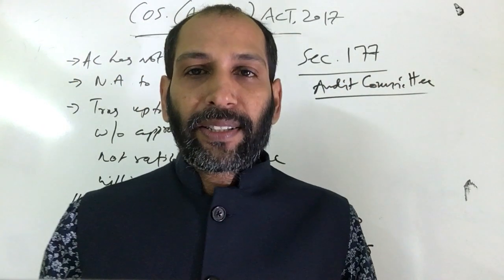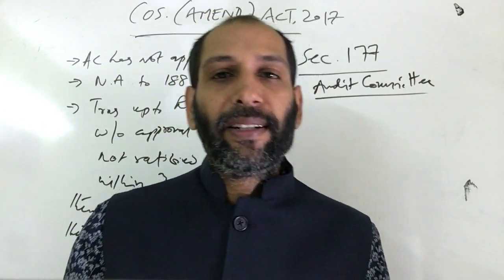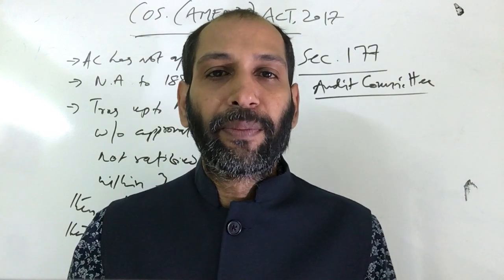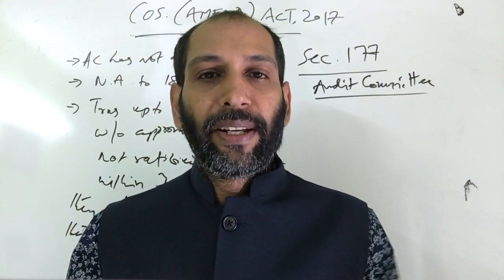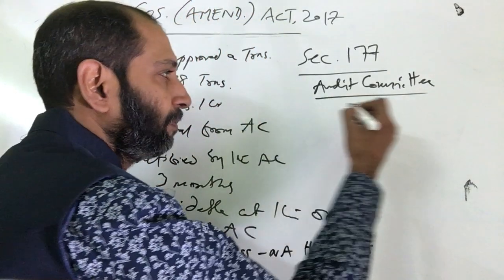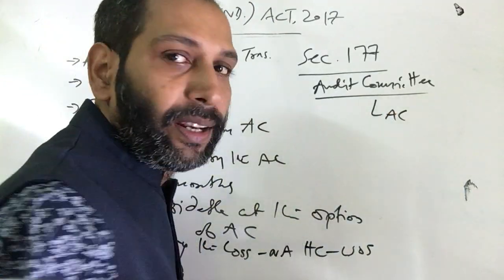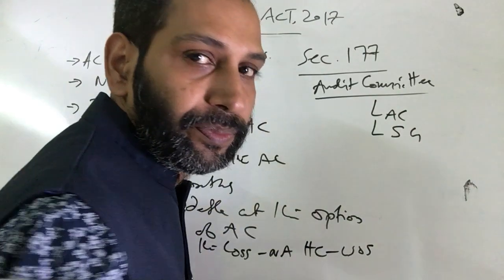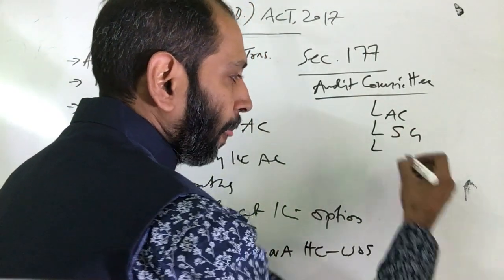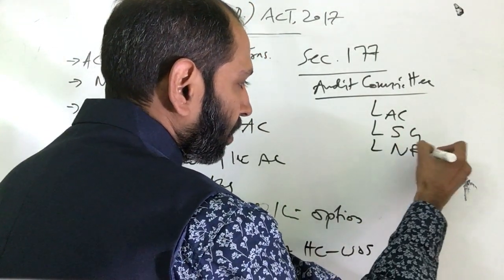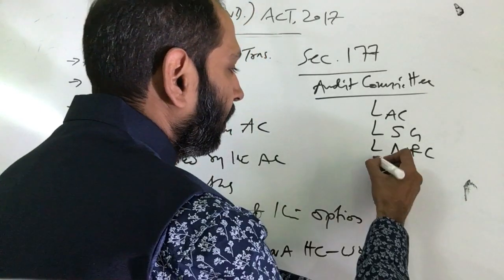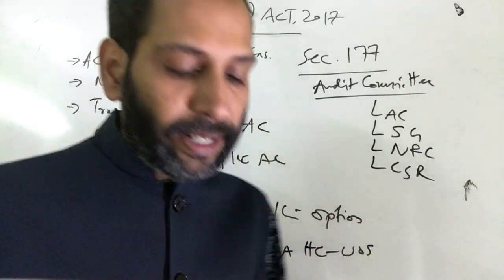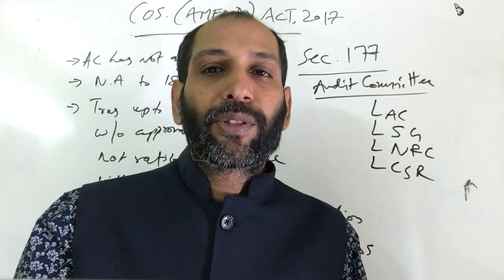As an introduction, you know that the Companies Act 2013 has some sub-committees of the board that are mandatory. There are various committees: the audit committee, the shareholders grievance committee, the nomination and remuneration committee, and the CSR sub-committee. There are applicability criteria for each of these.